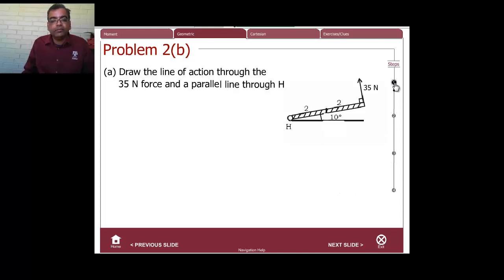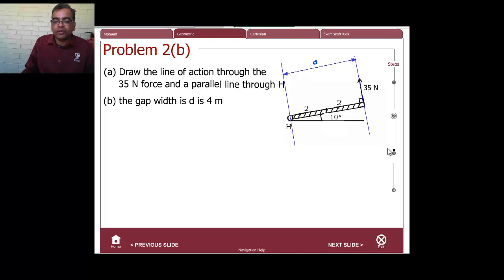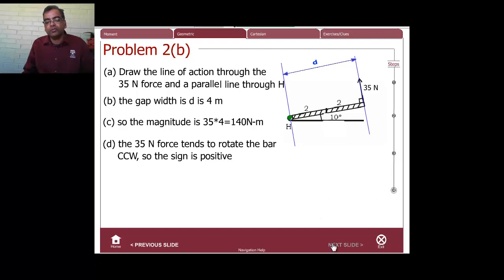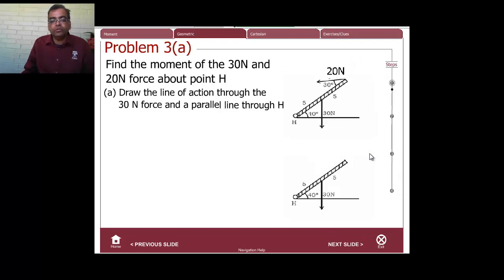Same procedure — draw the line, draw the parallel line. Remember the angle between the force and the gap line must always be a right angle. The magnitude comes out to 140 newton meters, and the sense is counterclockwise.